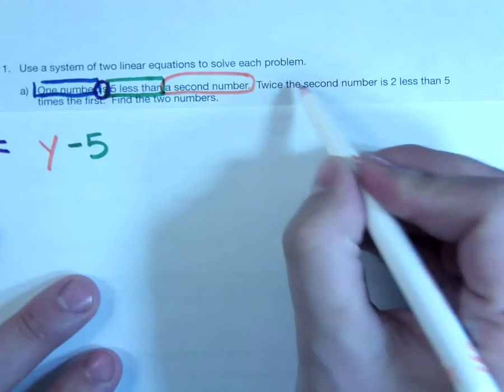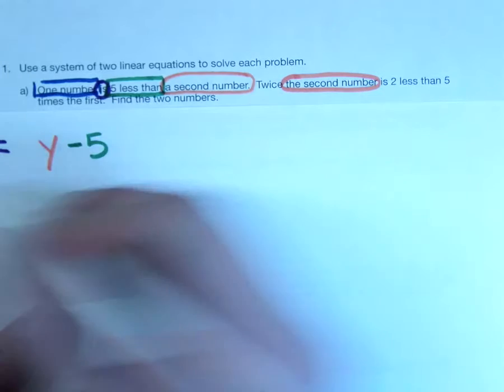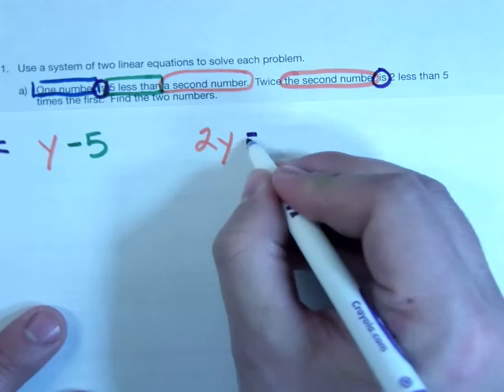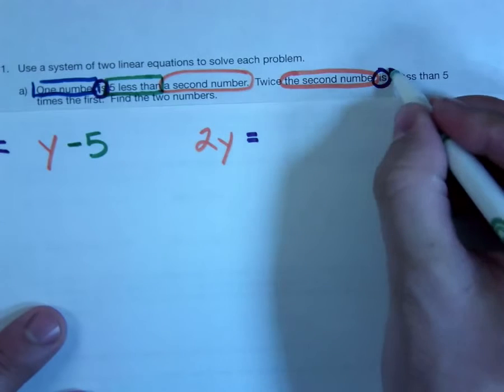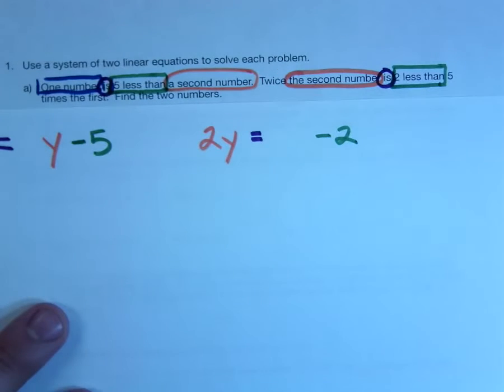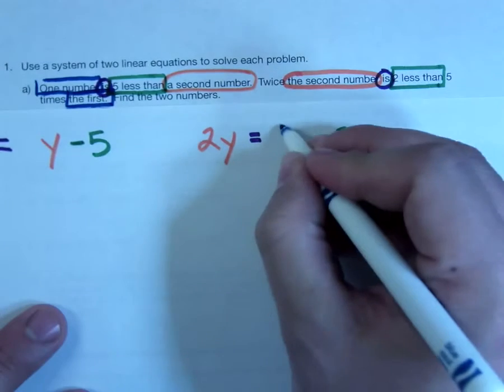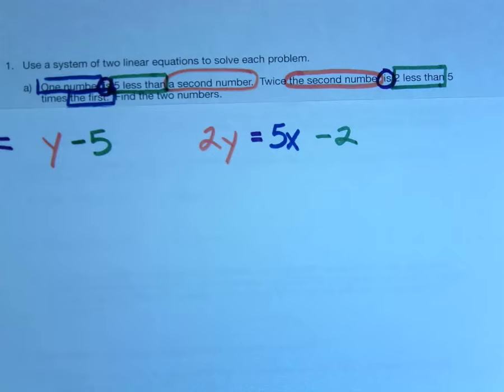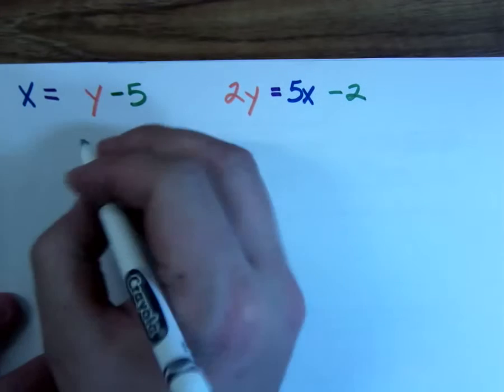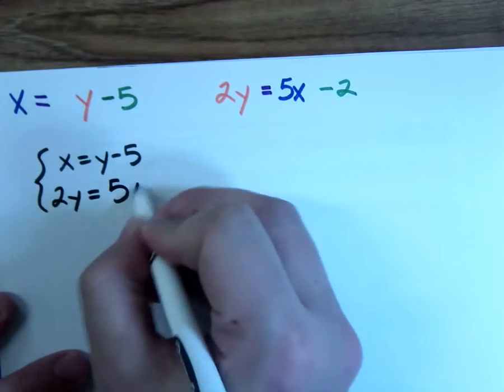Let's do our second equation. Twice the second number, so twice the second number is going to be two Y, is two less than five times the first. The first is the one that we called X, so five times the first is five X, and it's two less than that. So equation number two is two Y equals five X minus two. Now once you have those two equations set up, we're just going to solve them.